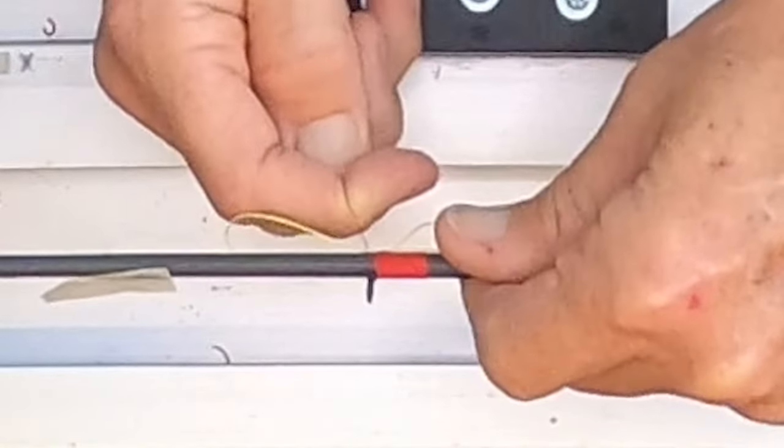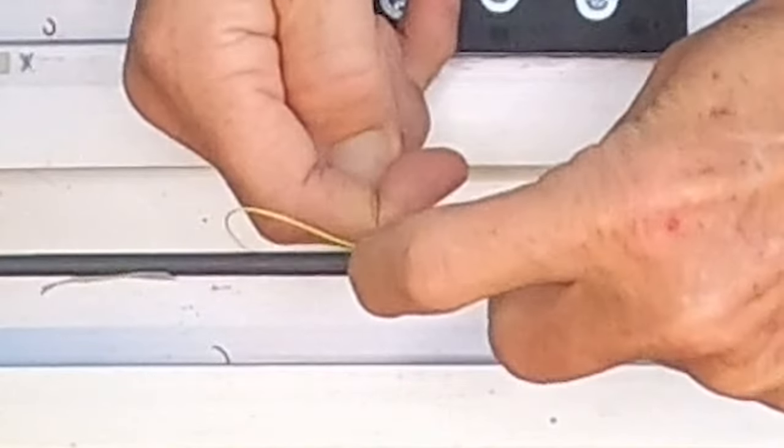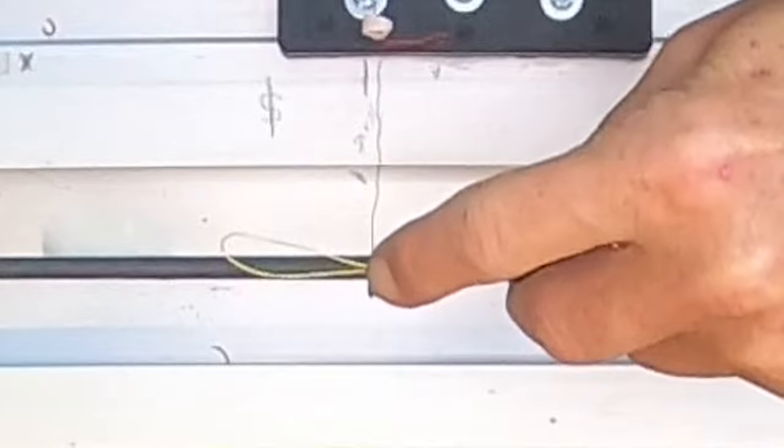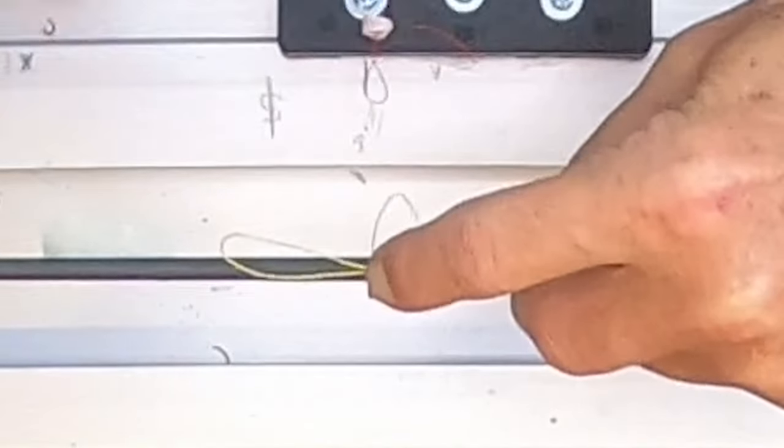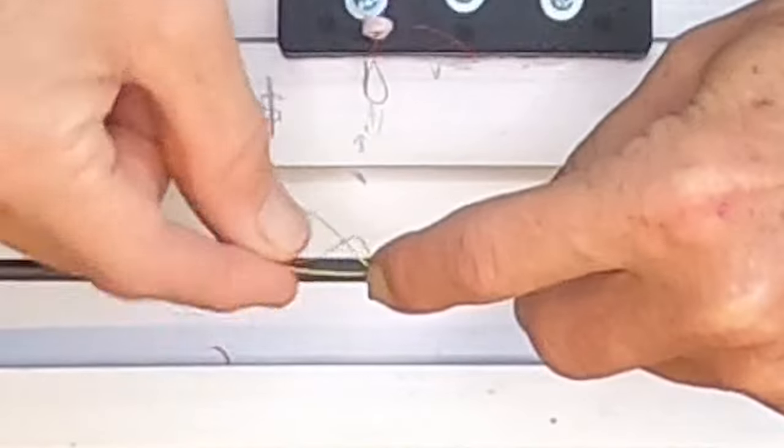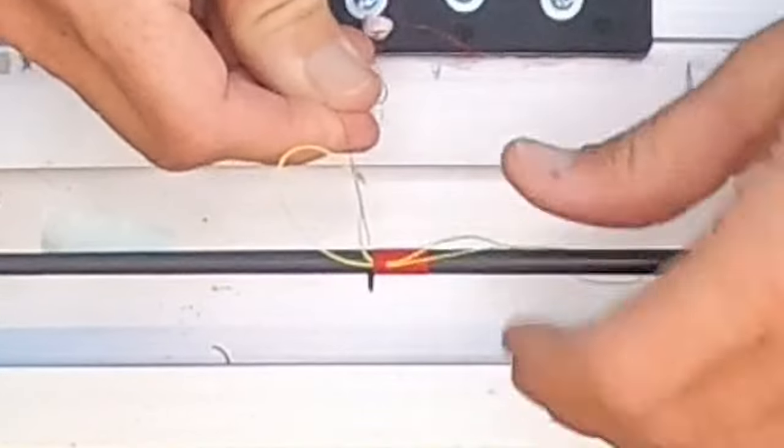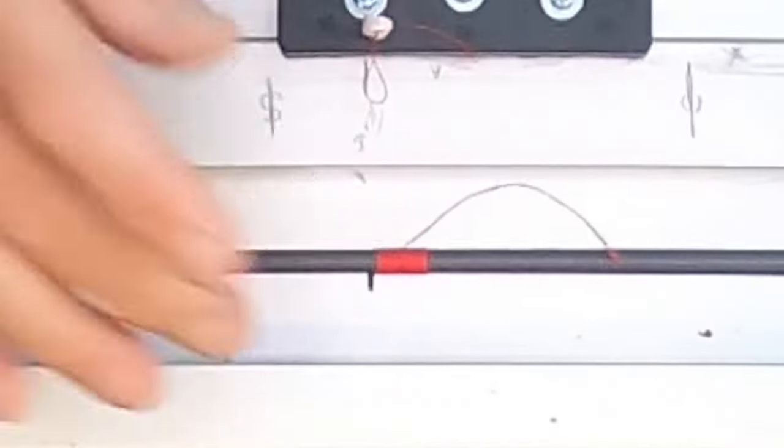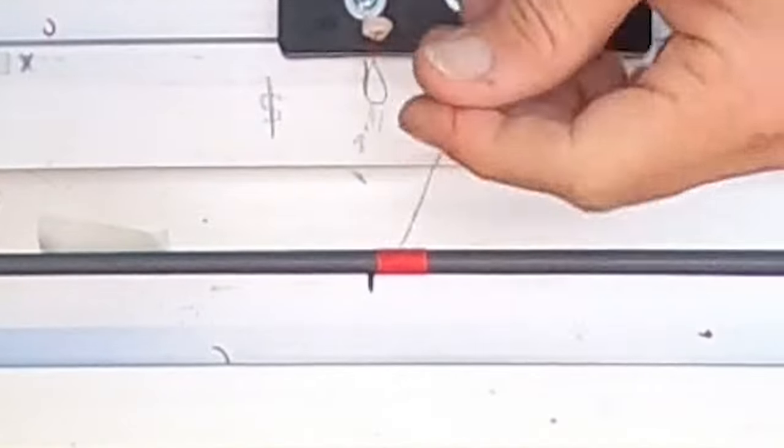And then I'll cut it and finish my wrap out like I normally would. So let's cut it, drop it through the loop. Pull your tag in out, trim it with a razor blade.